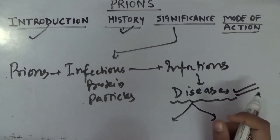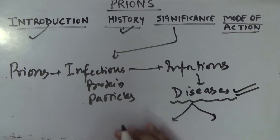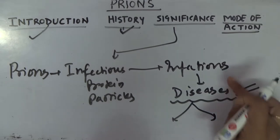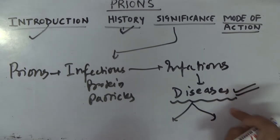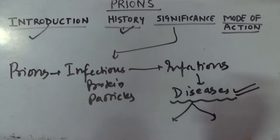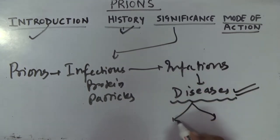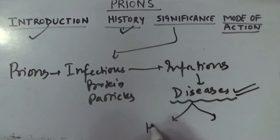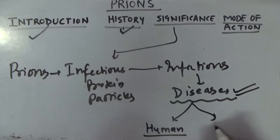Diseases are the main outcome resulting from prions. They are able to cause diseases in both humans and animals.